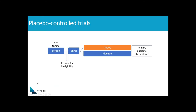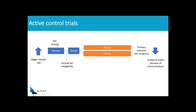I wanted to reflect a little bit on where we've come from. Many of you will remember the early days of HIV prevention where we worked with placebo-controlled trials. Participants were screened, and those that were HIV-negative were enrolled and randomized either to the active product or to a placebo. They were followed up for a period of time, and the primary outcome was HIV incidence compared between the two arms. More recently, we've seen the emergence of active control trials, which is essentially the same, but instead of participants being randomized to a placebo, they have been randomized to one of two active products.